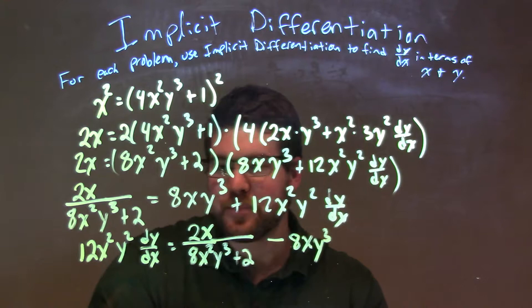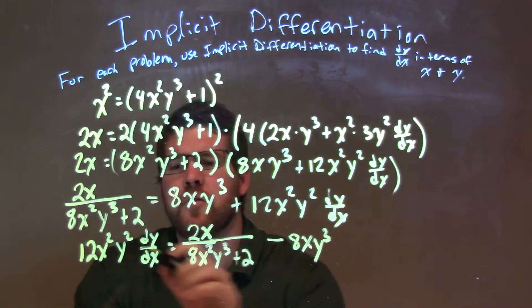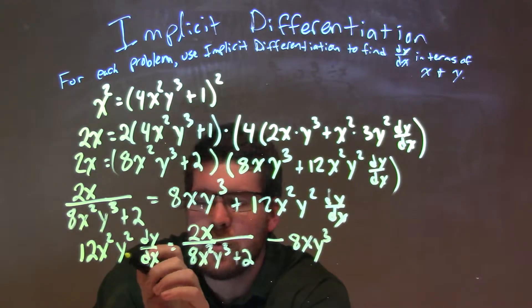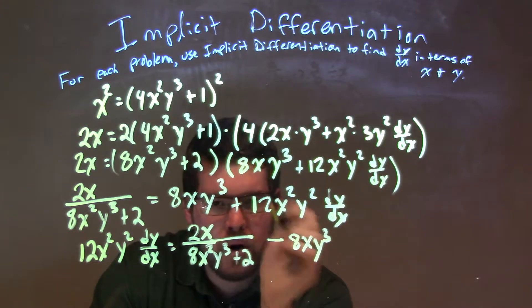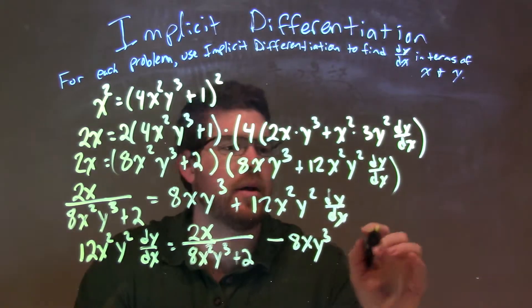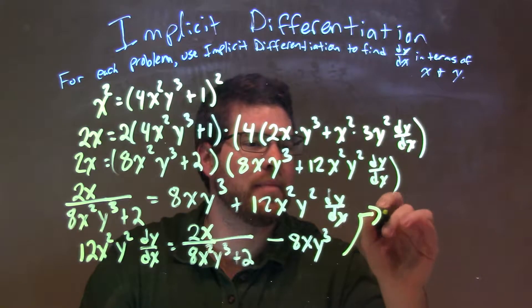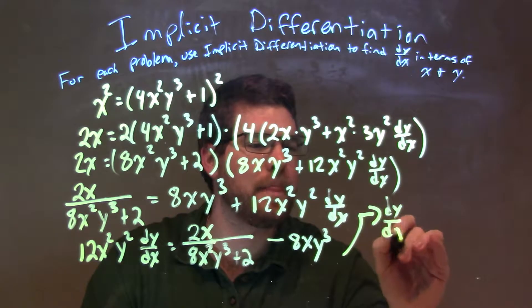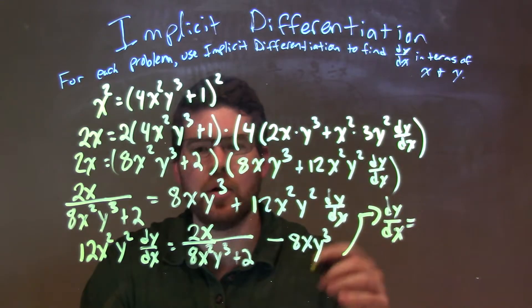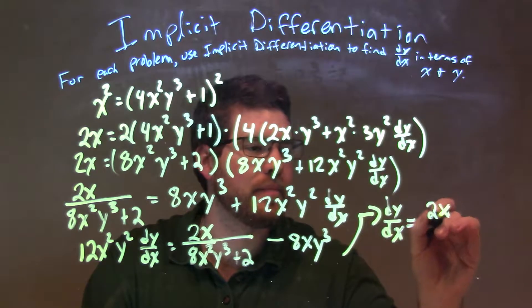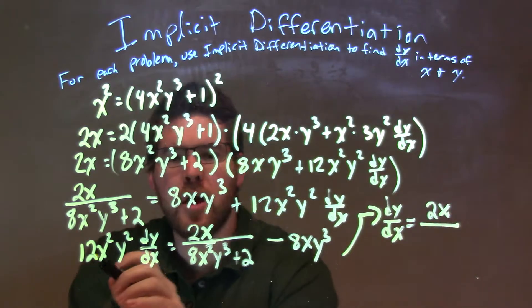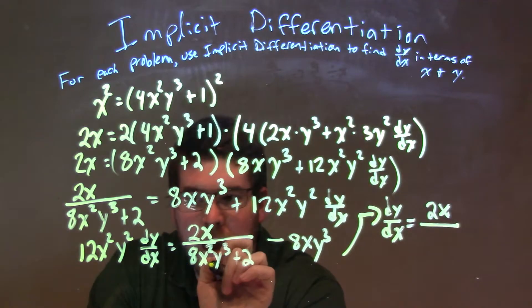I now just want to divide this 12x squared y squared to both sides, to move dy/dx by itself. So, dy/dx is equal to, well, 2x stays up top, over, multiply this 12. We're dividing 12 to both sides, goes in this denominator.